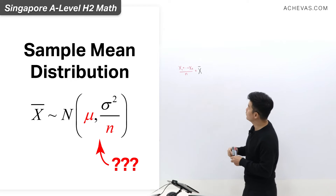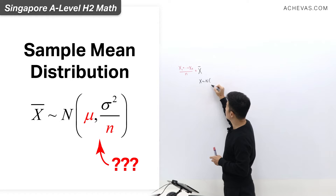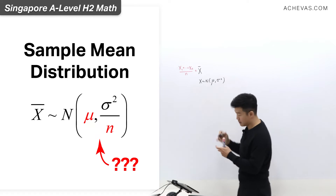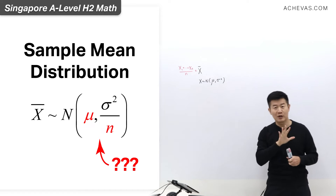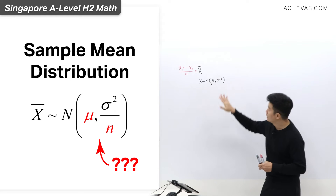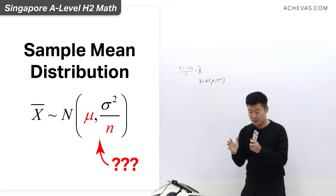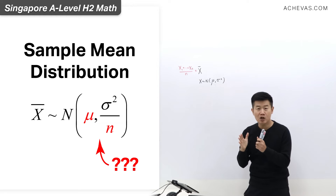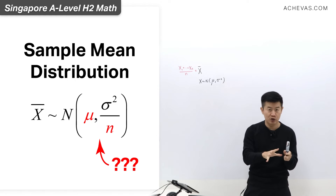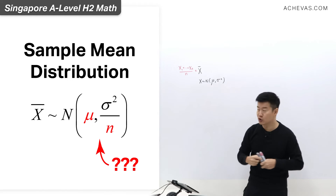If we look at a case where x — all these x's here — follows a normal distribution with a mean of mu and a variance of sigma squared. Please take note: we are not talking about the central limit theorem situation here. So x follows a normal distribution, and what we are doing is a linear combination of different normal distributions, which will lead x-bar to also be a normal distribution.